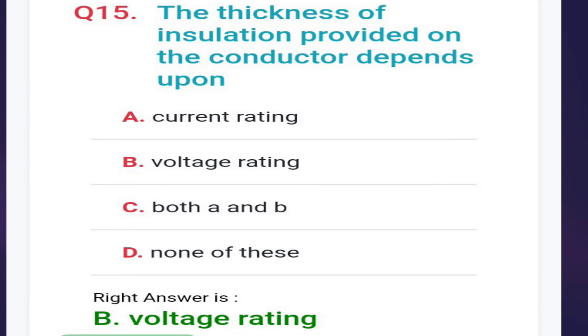Fifteenth: the thickness of insulation provided on the conductor depends upon current rating, voltage rating, both A and B, or none of the above. The correct answer is option B, voltage rating.